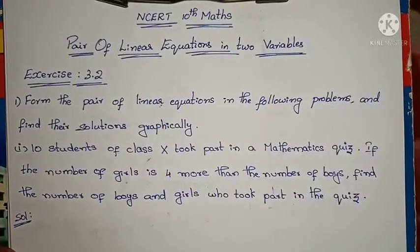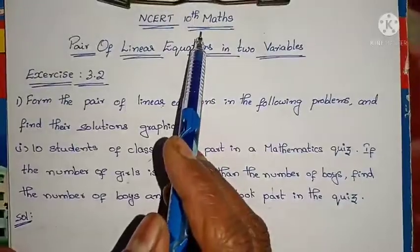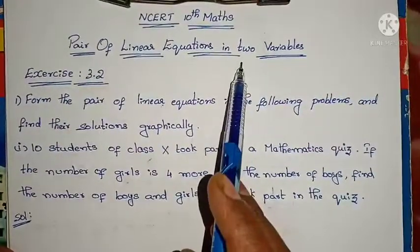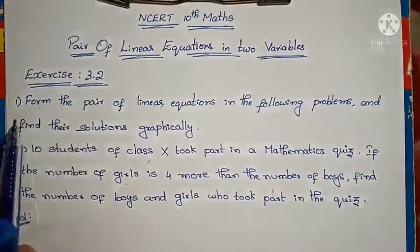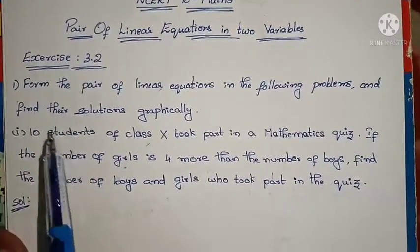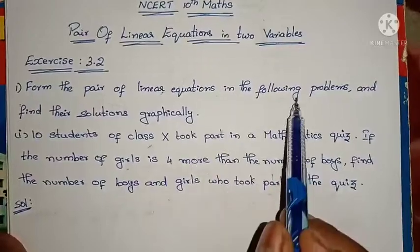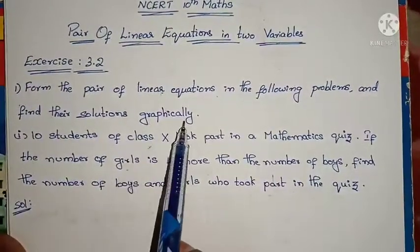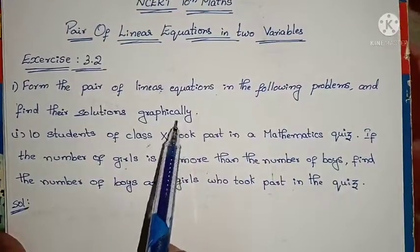Hello, hi, welcome to Parnika Maths. Today we are going to discuss NCERT 10th Maths 3rd chapter - Pair of Linear Equations in Two Variables, Exercise 3.2, first problem. The question says: form the pair of linear equations in the following problems and find the solutions graphically, meaning we have to find the solution by graph method.